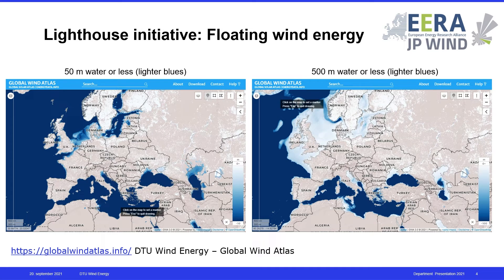Looking at the first initiative — floating wind energy — I always like to show this picture from the Global Wind Atlas, where you can select anywhere in the world at different water depths. There's now a bathymetry layer. On the left-hand side, anything that isn't dark blue is water over 50 meters, and everything lighter blue and white is under 50 meters. On the right-hand side, the legend shows water less than 500 meters. This illustrates what we've heard this morning about all of those new seas opening up to floating wind.